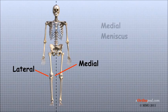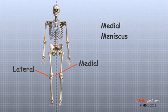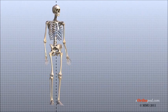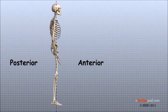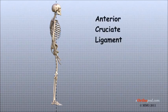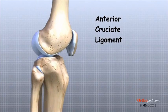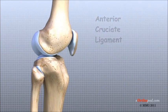Structures on the medial side usually have 'medial' as part of their name, such as the medial meniscus. The term anterior refers to the front of the knee, while the term posterior refers to the back of the knee. So the anterior cruciate ligament is in front of the posterior cruciate ligament.